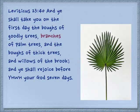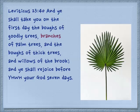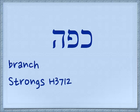Another thing called a kaf is the leaf structure of a palm branch — it looks just like the palm of a hand. Leviticus 23:40: 'And ye shall take you on the first day the boughs of goodly trees, branches of palm trees, and the boughs of thick trees, and willows of the brook, and ye shall rejoice before Yehovah your God seven days.' So if we take the kaf and the peh and add the he — kippah — this is a branch; it's a related word.